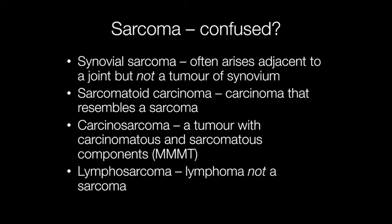Quite frequently, poorly differentiated carcinomas will resemble sarcoma, and these are known as sarcomatoid carcinomas. Carcinosarcomas occur most commonly in the uterus and have both carcinomatous and sarcomatous components — another name is malignant mixed Mullerian tumour or MMMT. Finally, lymphosarcoma is a rather ancient term for lymphoma and should not be used.